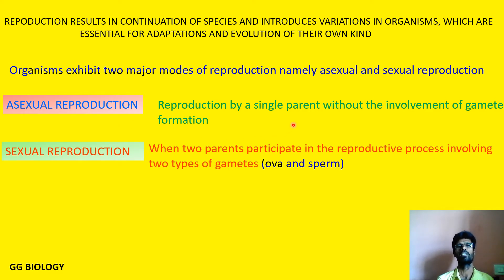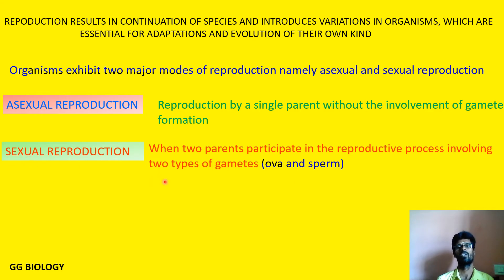Asexual reproduction occurs in the case of lower groups of organisms, and that we will be discussing today. The next type is called the sexual method of reproduction, where two parents are needed. The two parents — male as well as female — are essential, and their gametes must fuse to produce the young ones. We will be discussing sexual reproduction in the next video.